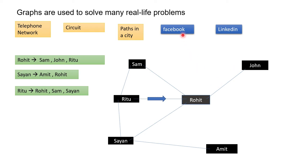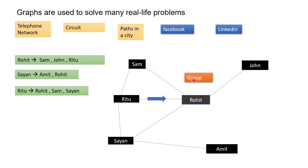If we take the example of Facebook, there are not only friendship entities but also many other things like groups and events. Suppose there is a Facebook group — a travel group or sports group. Some persons, which are actually nodes, can connect with that group. Suppose this group is followed by Sam, John, and Rohit — they can connect with this group. Those kinds of relationships also we can easily maintain using graph.